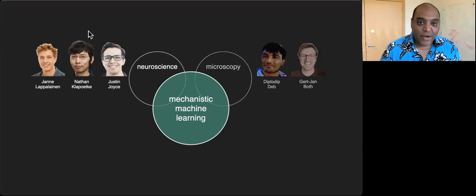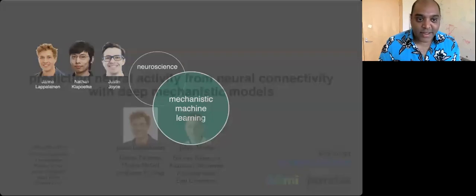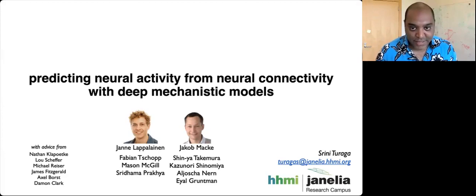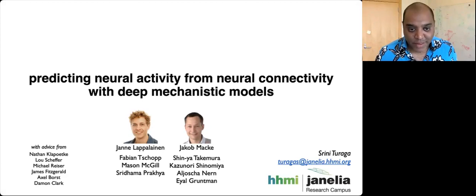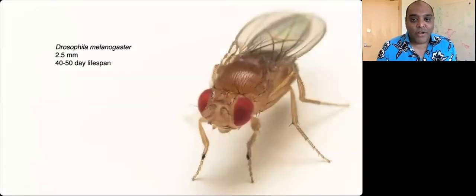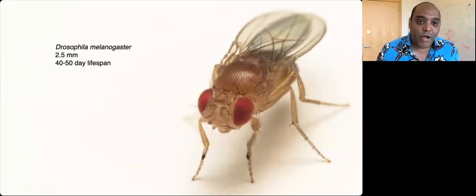Now I want to tell you about the neuroscience part of this project. This is about a new thing now possible in neuroscience: predicting neural activity from neural connectivity with mechanistic models. The star of this talk is the fruit fly Drosophila melanogaster — a small insect with a short lifespan that has about 150,000 neurons in its nervous system.